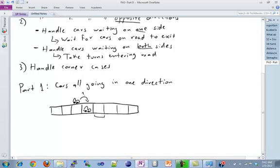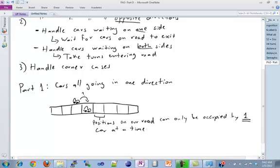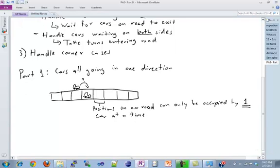So then one way to think about this is that positions on a road can only be occupied by one car at a time. And that makes sense, right? You can't have two cars in the same position on the road.